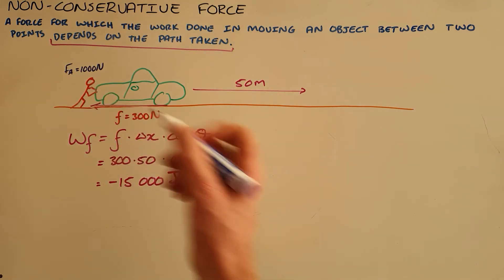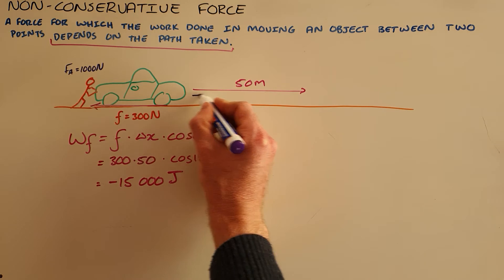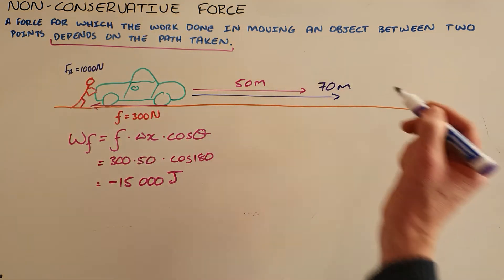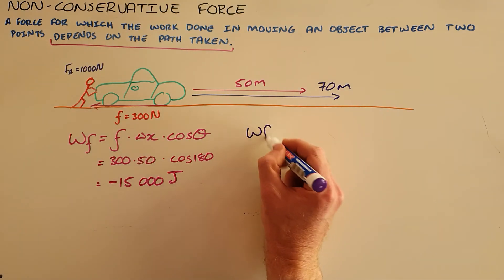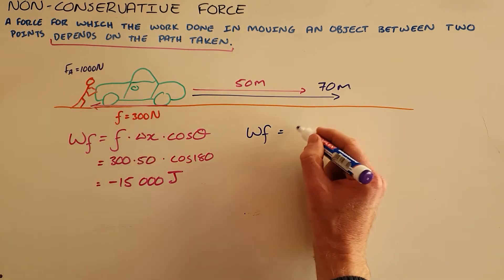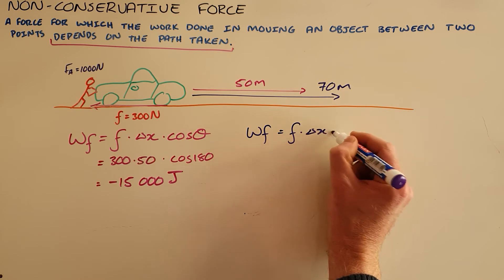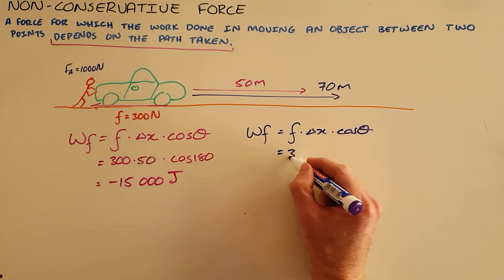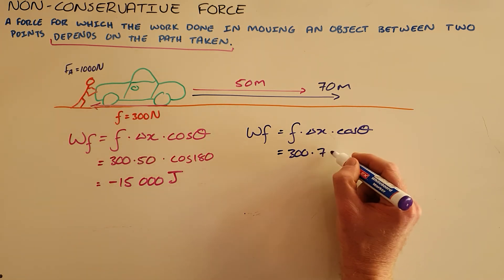Now the dependency on path taken tells us that if this object were to move further, say for example 70 meters, the work done by friction would then change because it's friction times displacement times the cosine of the angle between them. Friction here is still 300 but because the displacement is greater